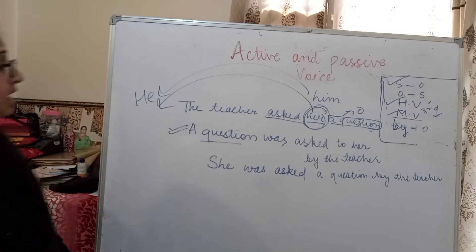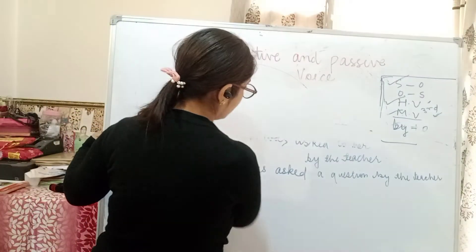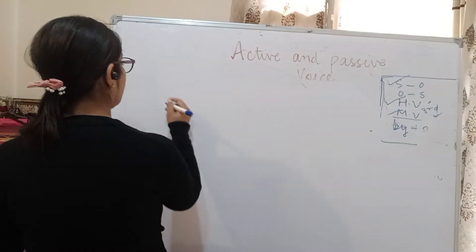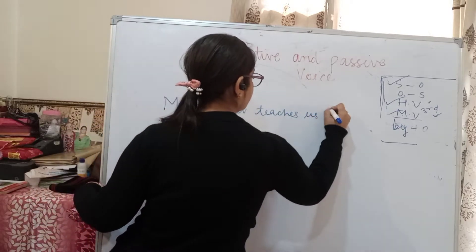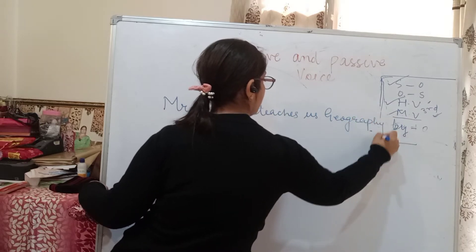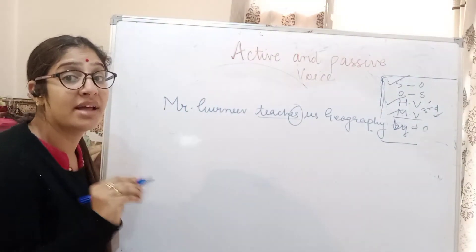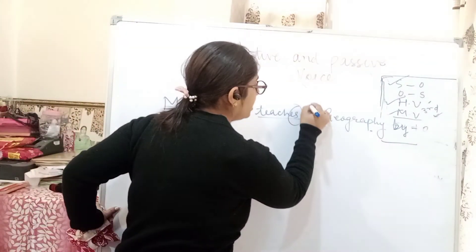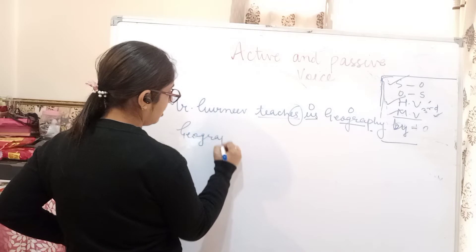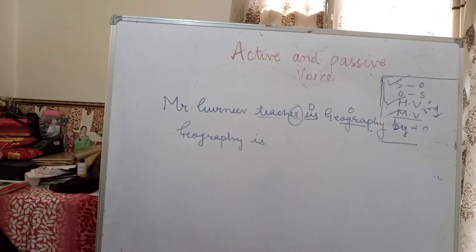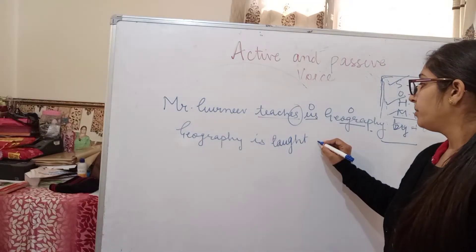Let's do another example. 'Mr. Gurneet teaches us geography.' Teaches is simple present, so we use is/am/are. We have two objects: 'us' and 'geography.' First, take geography as subject: 'Geography is taught to us by Mr. Gurneet.' The third form of 'teach' is T-A-U-G-H-T — taught. So: 'Geography is taught to us by Mr. Gurneet.'